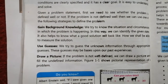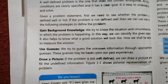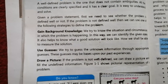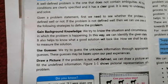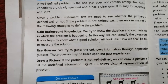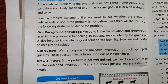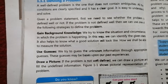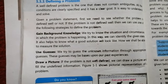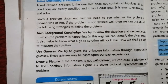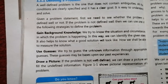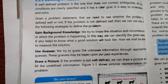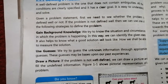The first method of defining the problem is to gain background knowledge. In background knowledge, we will try to know the situation and circumstances in which the problem is happening. We will see the situation where the problem takes place, which helps us identify the given state and understand what a good situation will look like.